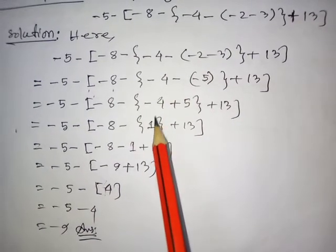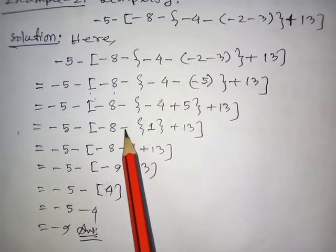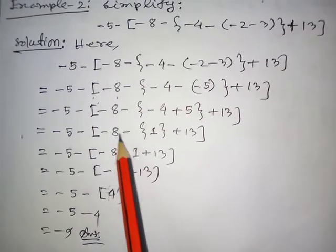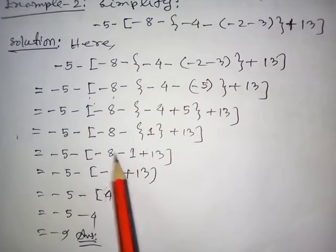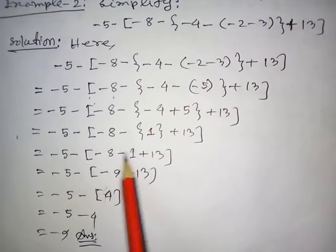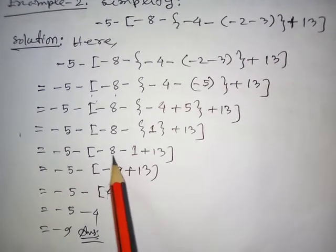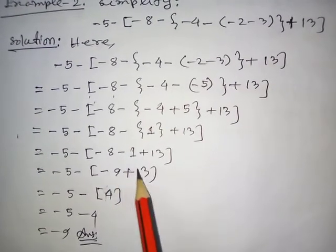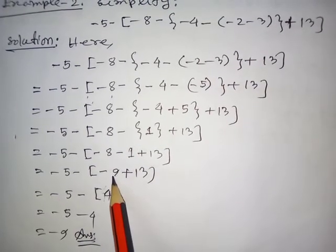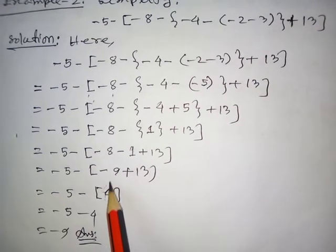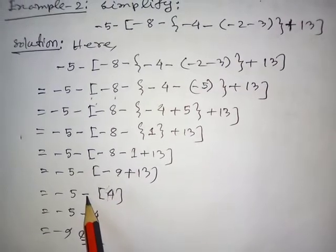5 minus 4 gives 1, and there is a minus sign before it, so it becomes minus 1. We have minus 8 and plus 13. Minus 1 and minus 8 are same sign, so we add: minus 9. Then 13 minus 9 gives us 4. There is a minus sign before this 4, so it becomes minus 4.